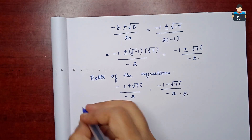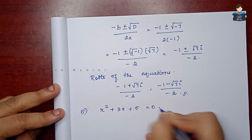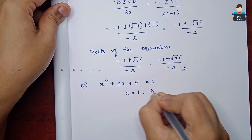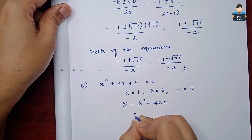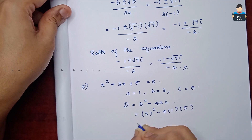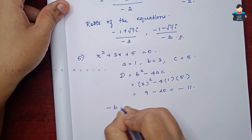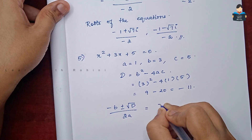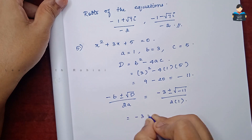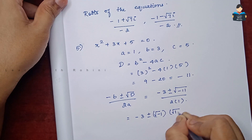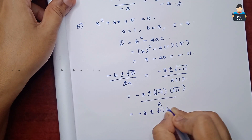The fifth and last sum: x² + 3x + 5 = 0. Here a = 1, b = 3, and c = 5. D = b² - 4ac = 3² - 4×1×5 = 9 - 20 = -11. Applying the quadratic formula: x = (-3 ± √(-11)) / (2×1) = (-3 ± √(-1)×√11) / 2 = (-3 ± √11 · i) / 2.